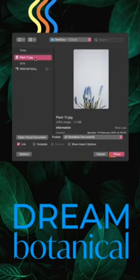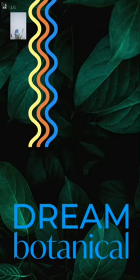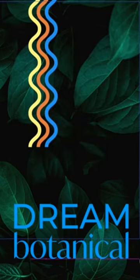Browse your folder, select the file and click on Place. Then click and drag your cursor to place the image on the artboard.